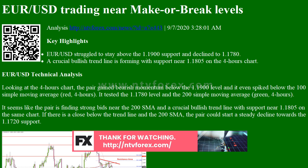EUR/USD Technical Analysis: Looking at the 4-hours chart, the pair gained bearish momentum below the 1.1900 level and it even spiked below the 100 simple moving average (red, 4 hours). It tested the 1.1780 level and the 200 simple moving average (green, 4 hours). It seems like the pair is finding strong bids near the 200 SMA and a crucial bullish trend line with support near 1.1805 on the same chart.